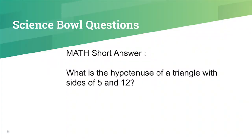Let's go through the remainder of our questions. Math, short answer: What is the hypotenuse of a triangle with sides 5 and 12? The answer is 13.